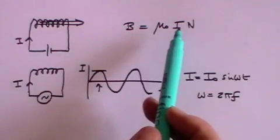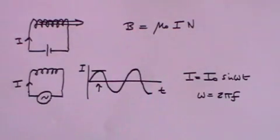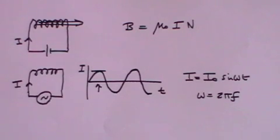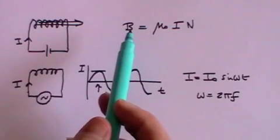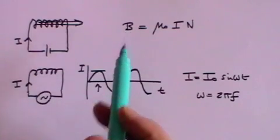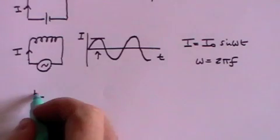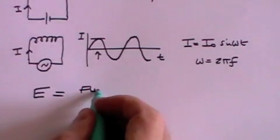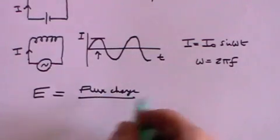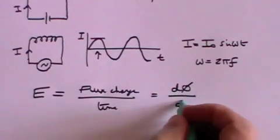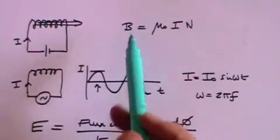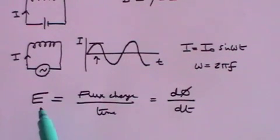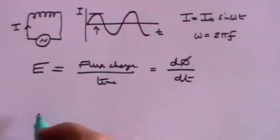And if you have a varying current, then you will have a varying magnetic field. Faraday says that as far as induced EMFs and induced currents are concerned, if you have a steady current and thus a steady magnetic field, you don't get any induction at all, because Faraday says that an induced EMF is equal to flux change divided by time — dphi by dt. If you have a constant magnetic flux, there is no flux change, so there will be no induced EMF.